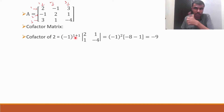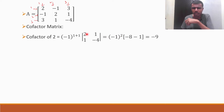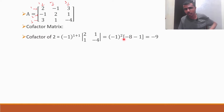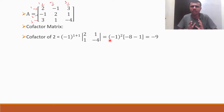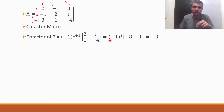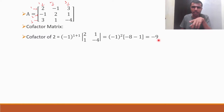Minus 1 to the power 1 plus 1 is minus 1 to the power 2. So 2 into minus 4 is minus 8, minus 1 ones are 1, so minus 8 minus 1. Minus 1 to the power an even number you can ignore it because minus 1 to the power 2 is plus 1. So minus 8 minus 1 is minus 9.